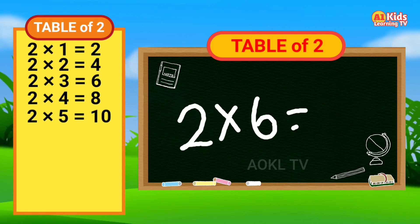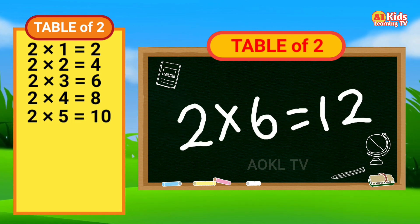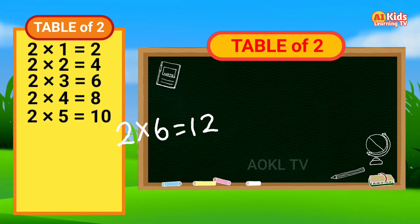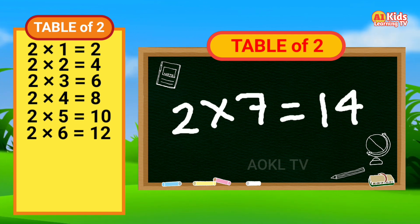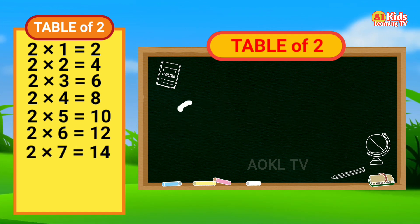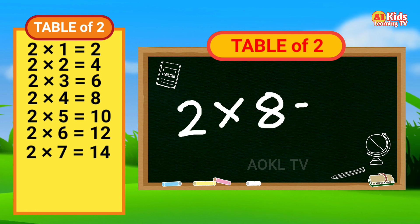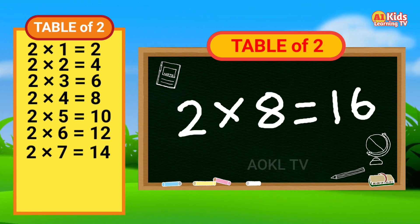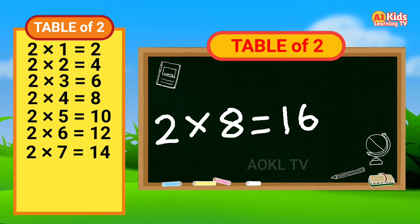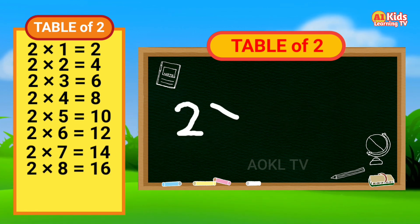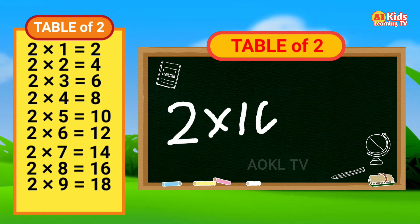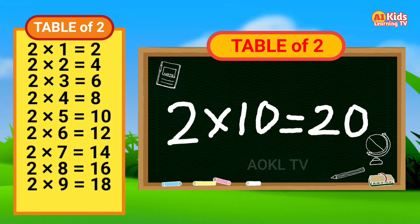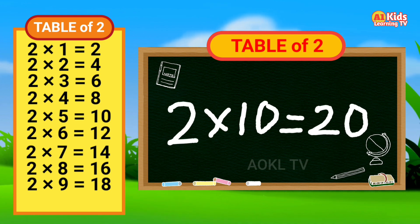Two six's are twelve. Two seven's are fourteen. Two eight's are sixteen. Two nine's are eighteen. Two ten's are twenty.